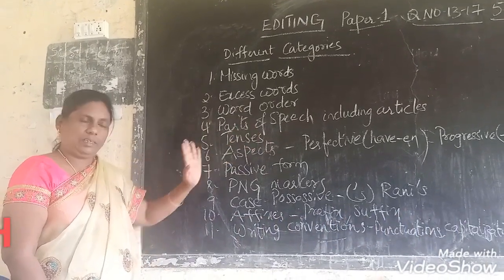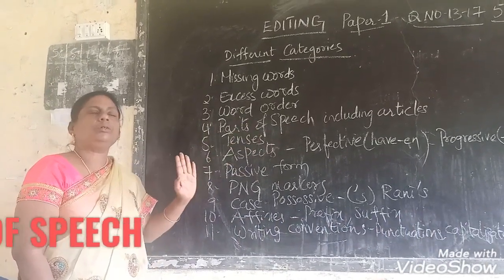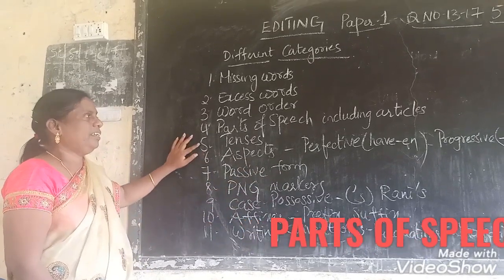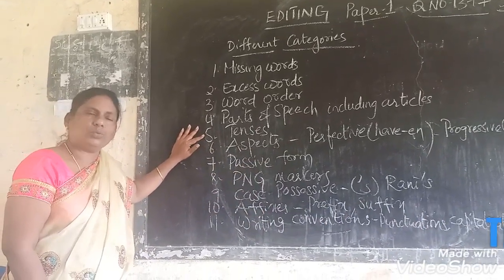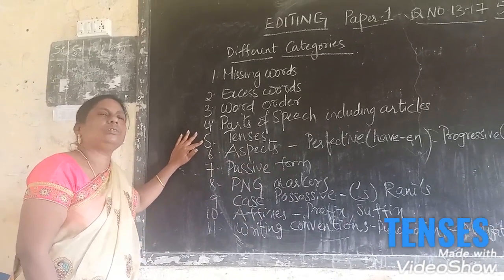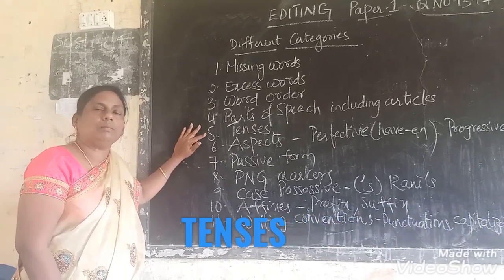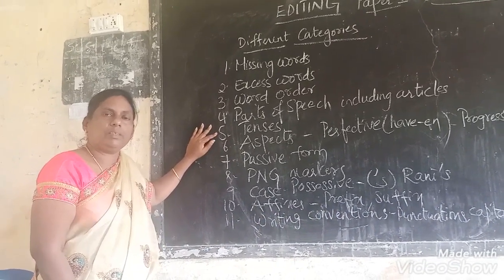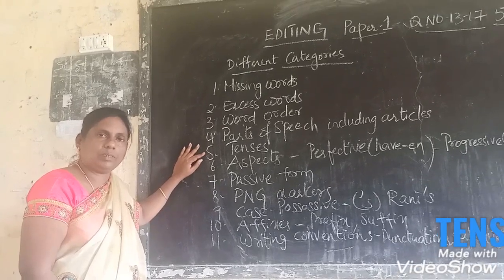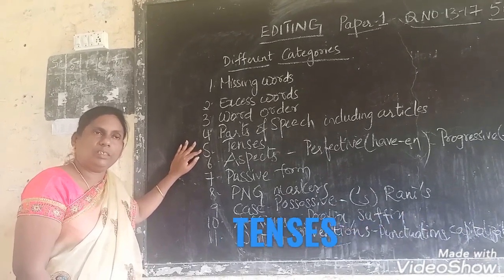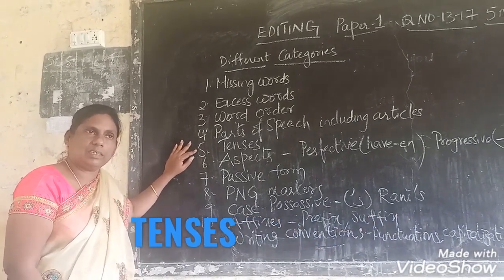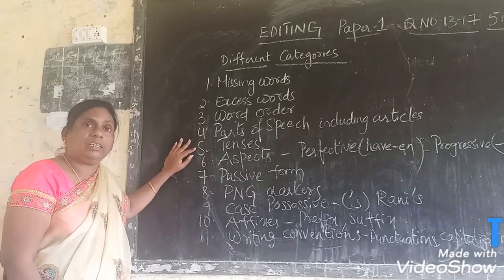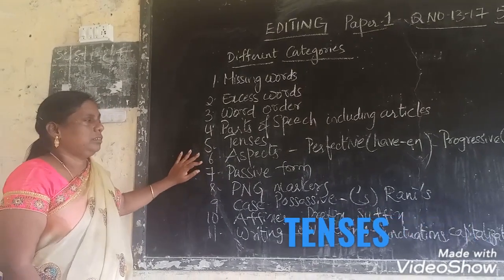Parts of speech also includes articles, which I am going to deal with in detail after this. Then tenses — as you all know, there are tenses of two types: present and past. We have to see whether the passage is in past tense or present tense, and whether the sentence is consistent with the tense of the given passage.